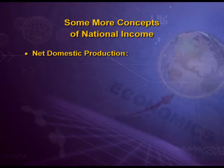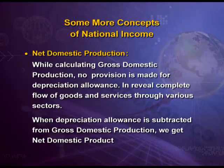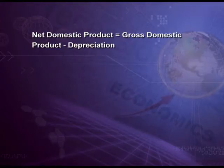Today we are starting with some more concepts of national income. First is Net Domestic Product. While calculating gross domestic production, no provision is made for depreciation allowance — it reveals the complete flow of goods and services through various sectors. When depreciation allowance is subtracted from gross domestic production, we get net domestic production. As we know: gross minus depreciation equals net. So, Net Domestic Product equals Gross Domestic Product minus depreciation.